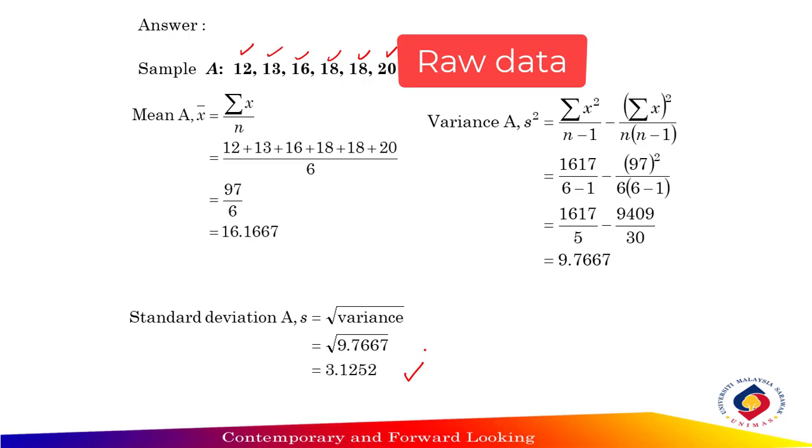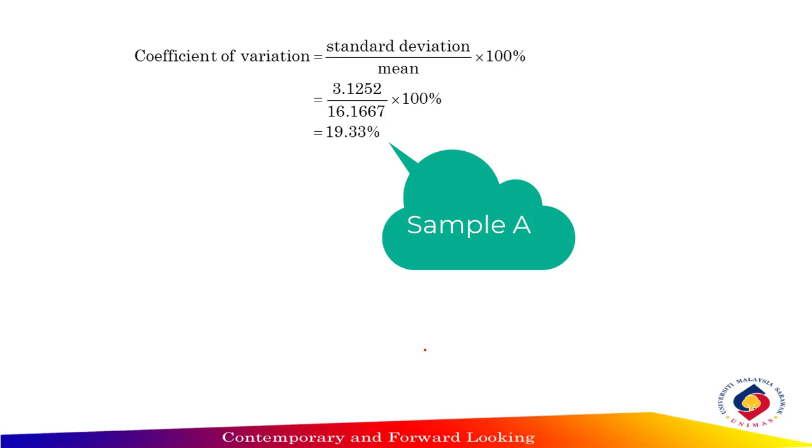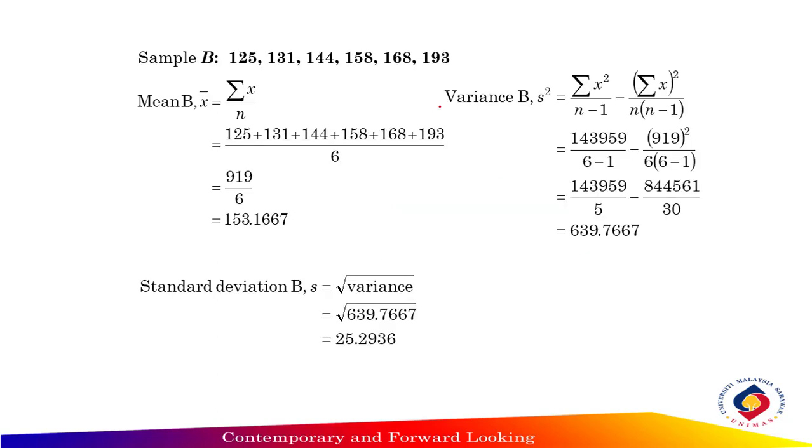And then after you get the mean and standard deviation, substitute into coefficient of variation. Standard deviation divided by mean times 100%. 3.1252 divided by 16.1667 times 100% equals 19.33%.